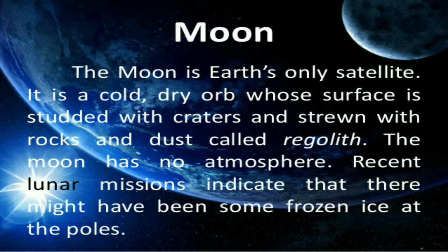The Moon is the satellite of Earth and also revolves around the Earth. Its surface is made up of a cold and dry orb, saturated with craters and rocks and dust called regolith. The Moon has no atmosphere, and recent lunar missions indicate that there might have been some frozen ice at the poles. You all understand that the Moon is Earth's only satellite.